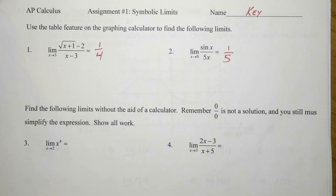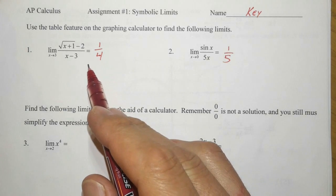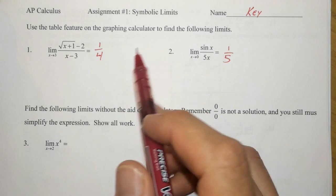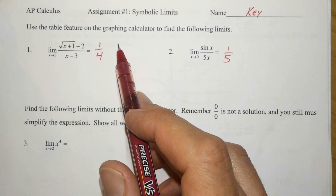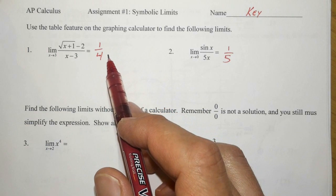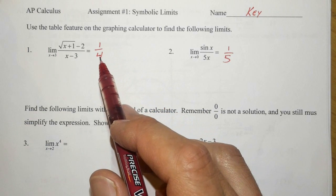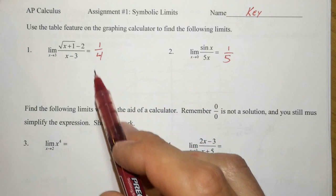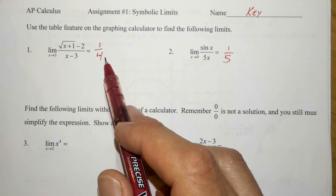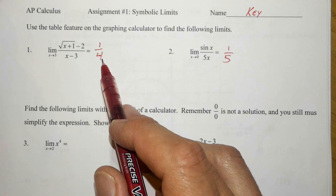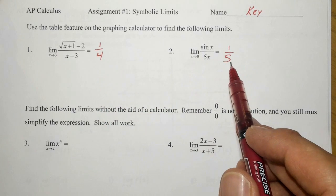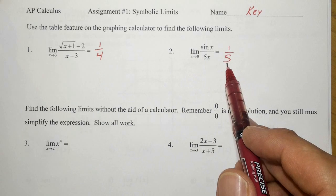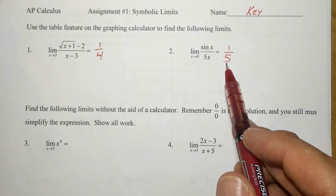Here's the answer key for assignment number one. Problems one and two are done on the graphing calculator. Nothing like this is going to be on the quiz. Problem number one, if you use a graphing calculator, should come out to a quarter, and problem number two should come out to a fifth.